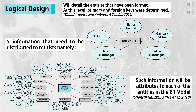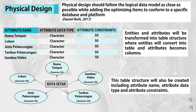Next, the logical design details the entities that have been formed. At this level, primary and foreign keys are determined. We have decided that there will be five main pieces of information that might attract tourists to places of interest in Kedah, including: nama tempat, lokasi, jenis pelancongan, tarikan pelancongan, and optionally some photos or videos.